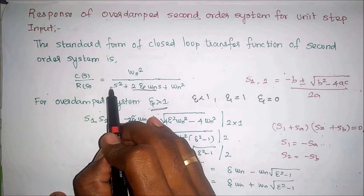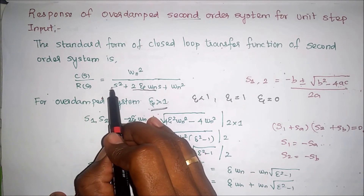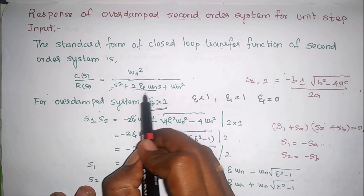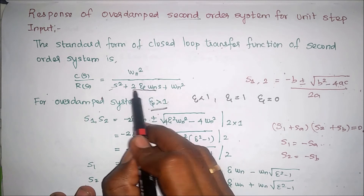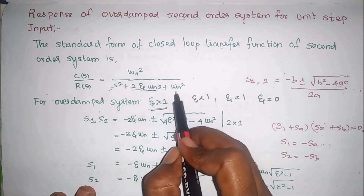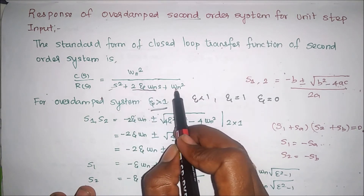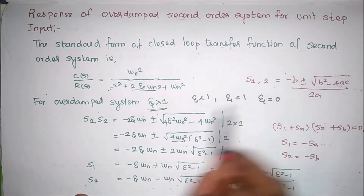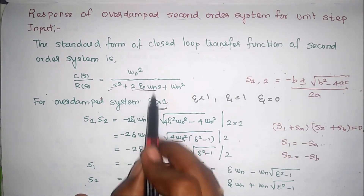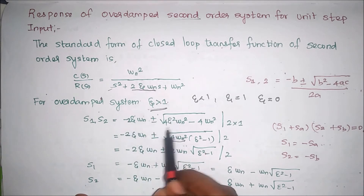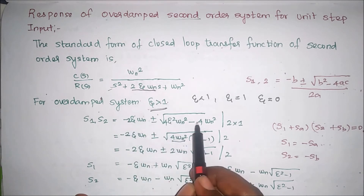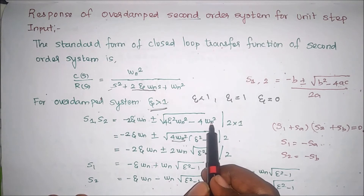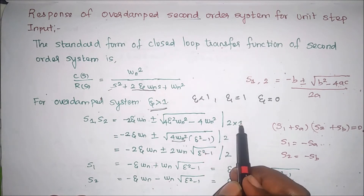From the characteristic equation, the coefficient of s squared is a, so a equals 1. The coefficient 2*eta*omega_n is b. The constant term omega_n squared is c. Substituting into the quadratic formula: minus 2*eta*omega_n plus or minus square root of (2*eta*omega_n) squared minus 4 times 1 times omega_n squared, divided by 2 times 1.